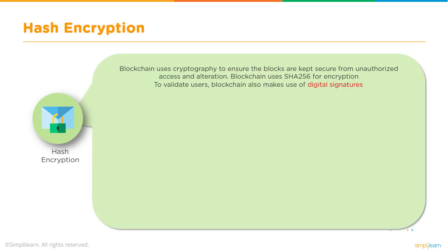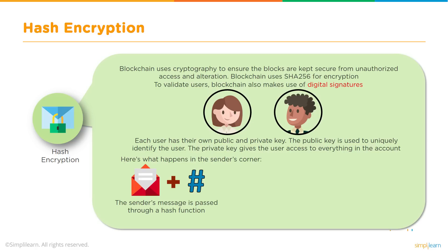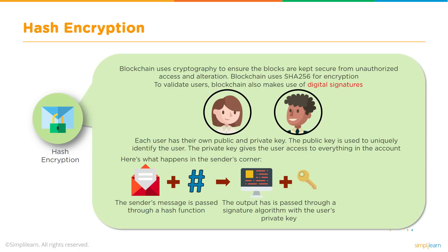Blockchain uses cryptography to ensure the blocks are kept secure from unauthorized access and alteration. Blockchain uses the SHA-256 encryption algorithm. To validate users, blockchain also makes use of digital signatures. Whenever a user onboards a blockchain network, he or she generates their own public and private key pair. The public key is used to uniquely identify the user, and the private key gives the user access to everything in their account. When a sender wants to send a message, that message is passed through the SHA-256 hashing function, then the output is passed through a signature algorithm with the user's private key, and this is how a digital signature is obtained from the sender side.